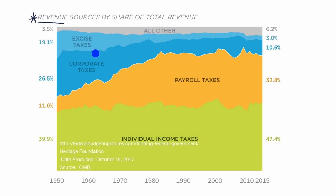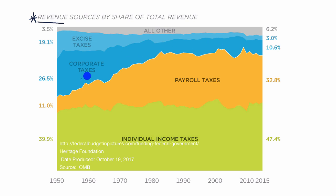This visual shows the breakdown between these four taxes for the federal government's revenue and how it's changed from 1950 all the way to 2015. Individual income taxes as a percent of total government revenue have stayed roughly stable, but payroll taxes have grown dramatically while corporate taxes have shrunk. Payroll taxes have gone from 11% of federal revenue in 1950 to nearly one-third in 2015. Corporate taxes have gone down from 26.5% all the way to 10.6%. Excise taxes used to be a significant part but are now a very small part of total government revenue.